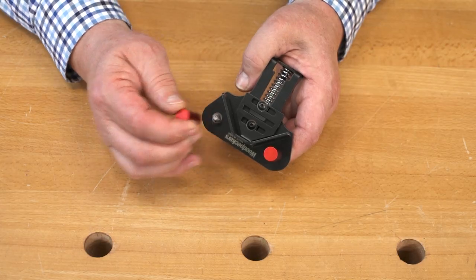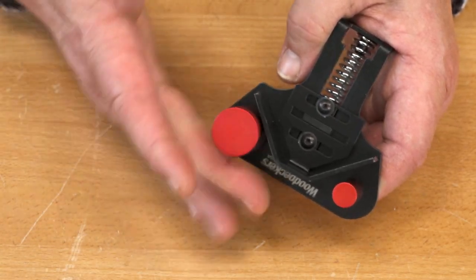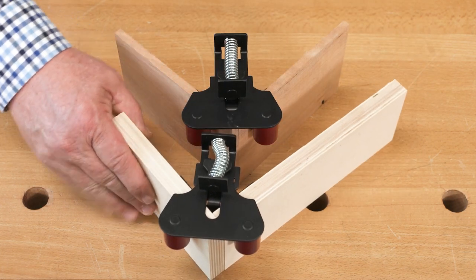Just spin the standard pins off and thread on the larger diameter, thin material pins. Now you can work with stock from one quarter inch to three quarters of an inch.